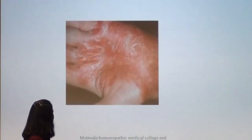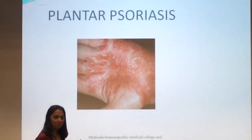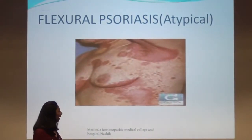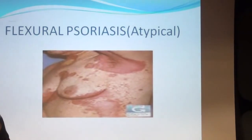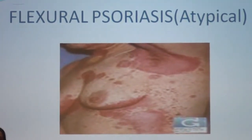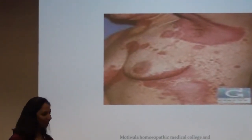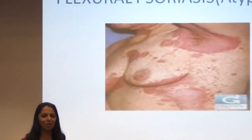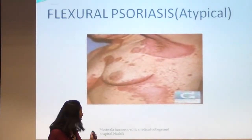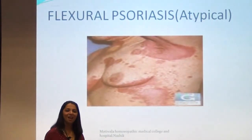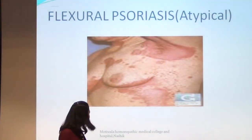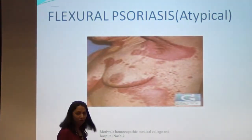This is flexural psoriasis — an atypical type of psoriasis with flexural distribution rather than the typical extensor distribution. The prevalence of this type is less and it may have minimal itching, making it a little difficult to diagnose.